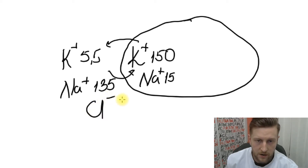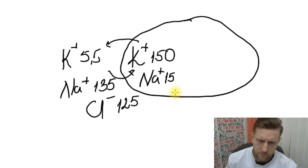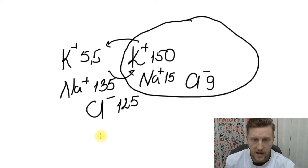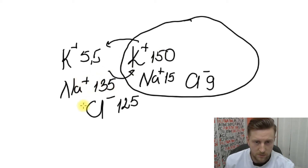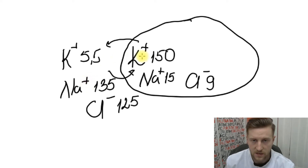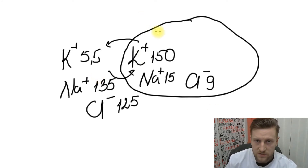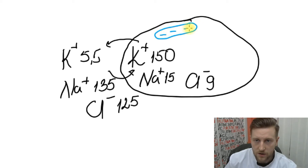If we talk about negative ions, we need to mention chlorine. Outside we have around 125 millimole per liter of chlorine; inside, around 9 millimole per liter. You may ask: inside we have a lot of potassium (positive), outside a lot of sodium (positive), and outside a lot of chlorine that compensates sodium — so why is the inside negative relative to outside? To understand that, we need to remember that inside the cell we have a lot of proteins, and these proteins are charged negatively.